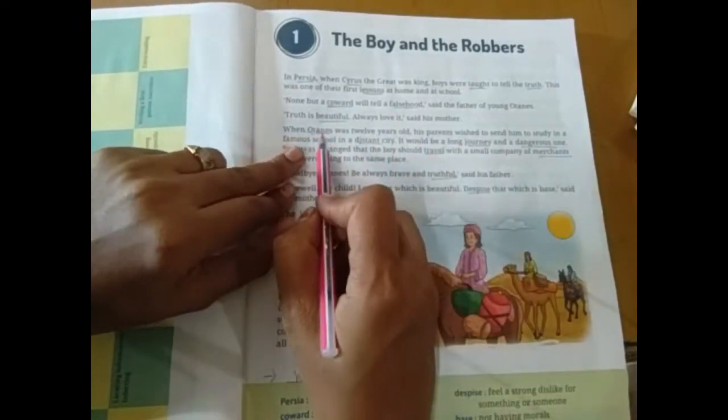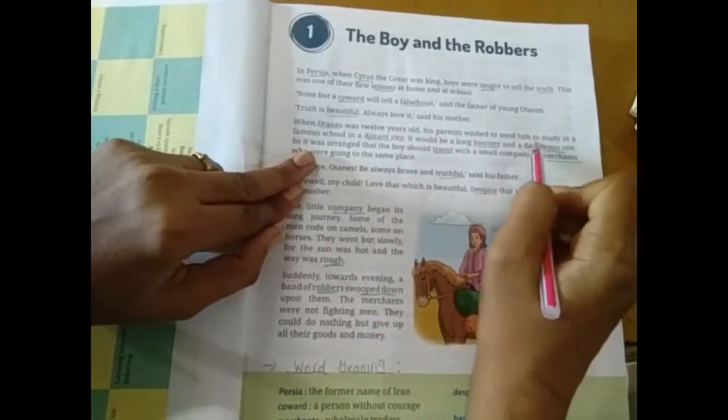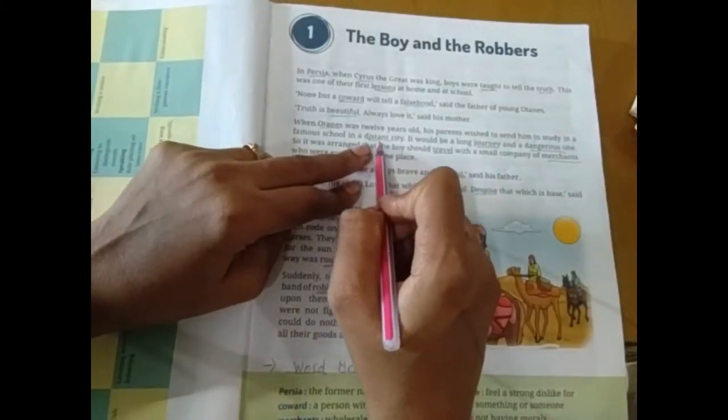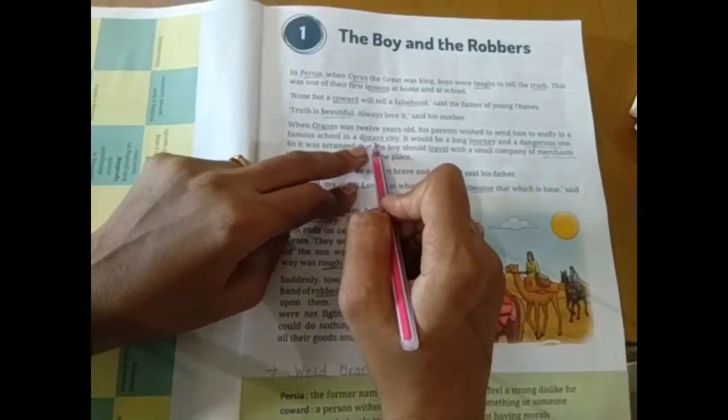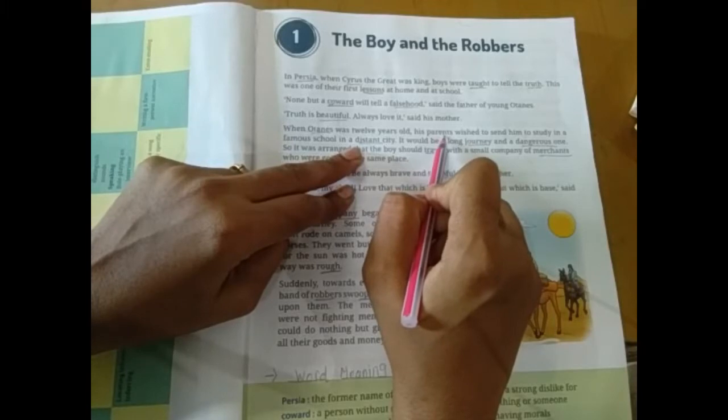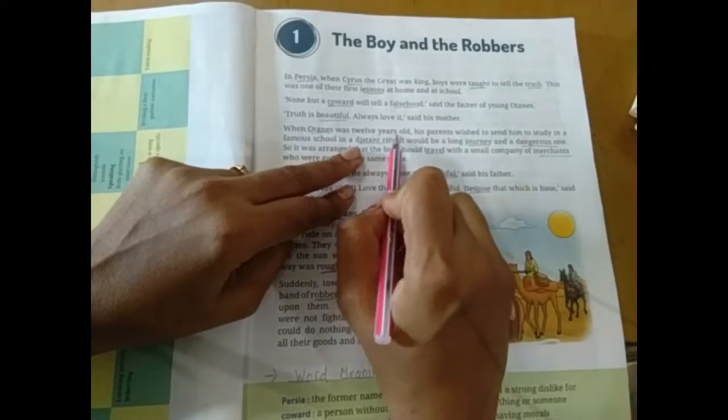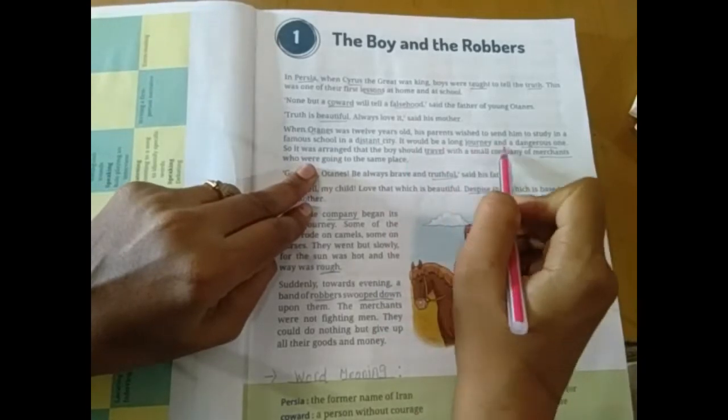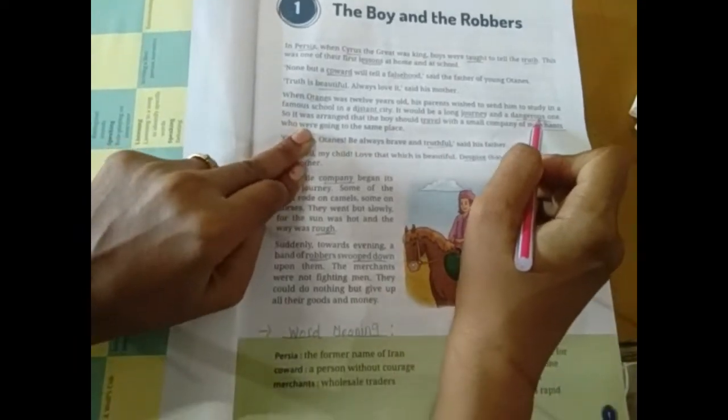When Hortense was 12 years, his parents wish to send him to study in a famous school in a distant city. Unke ghar se jo thode dur distance city mein ek famous school thi, jahan par achhi paday hoti thi. Uske Hortense ki parents ki iccha thi. It would be a long journey and a dangerous one. Aur uska wahan ka area bhi kaisa tha? Dangerous tha.